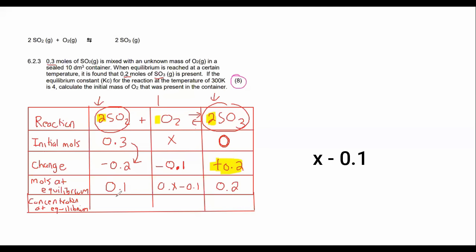Now can you look at the mole ratio between SO3 and SO2? It's in a 2 to 2 relationship or a 1 to 1 relationship. So that means that this number can be -0.2. It's negative because it's a reactant, it becomes less.